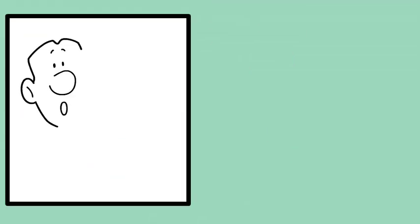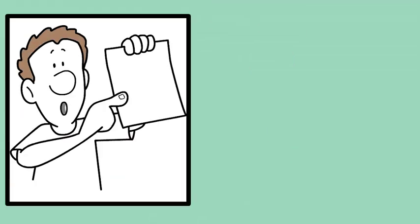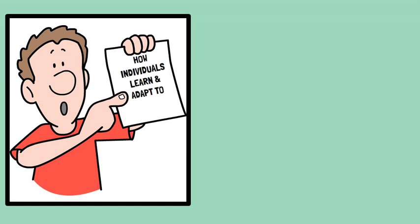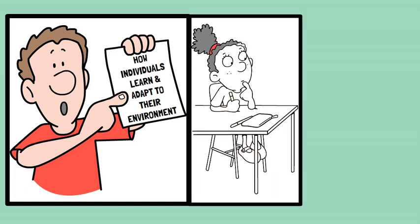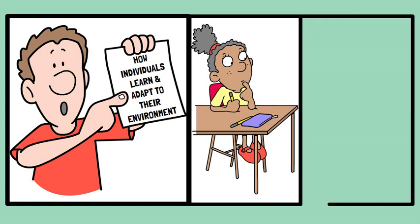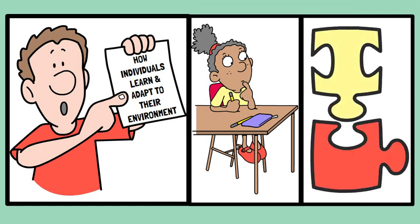Ivan Pavlov's theory laid a foundational concept in the field of psychology, shedding light on how organisms learn and adapt to their environment. Classical conditioning is a way that we learn about the things in the world around us. It happens when we start to connect two things that happen together.